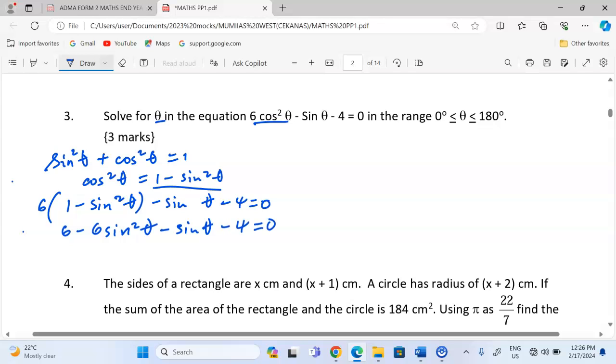With this, we can rearrange the equation such that sinθ is let to be t. Let us let sinθ be t. This means the equation can now be rewritten as, remember again, 6 and -4 can be combined to be positive 2. So we will have 2 - 6t² - t = 0.